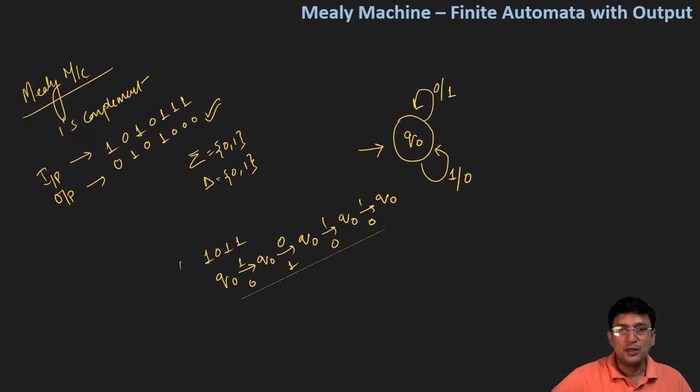So 0100 is the output corresponding to the input. This is actually the one's complement of the given number.